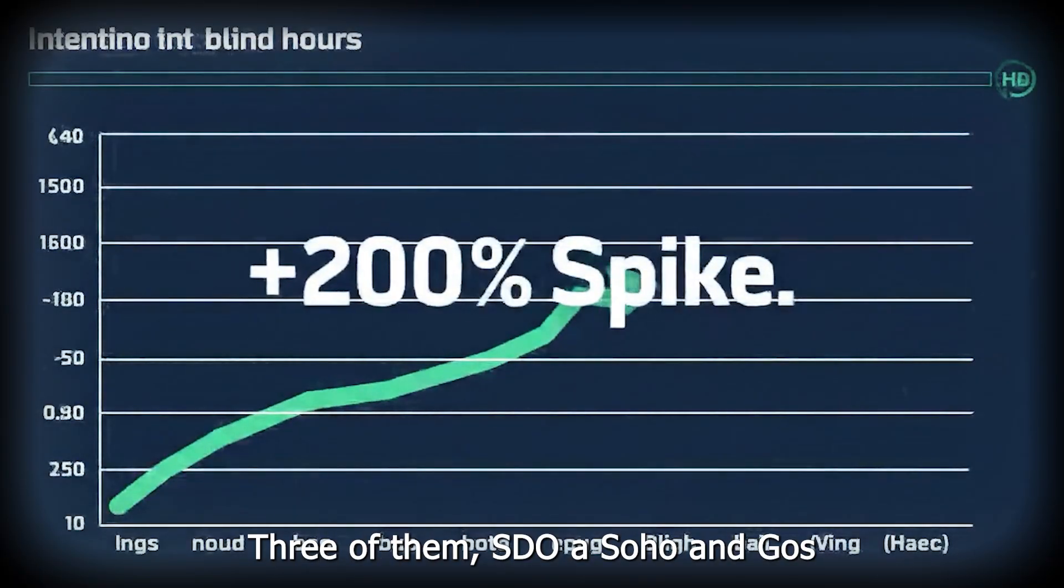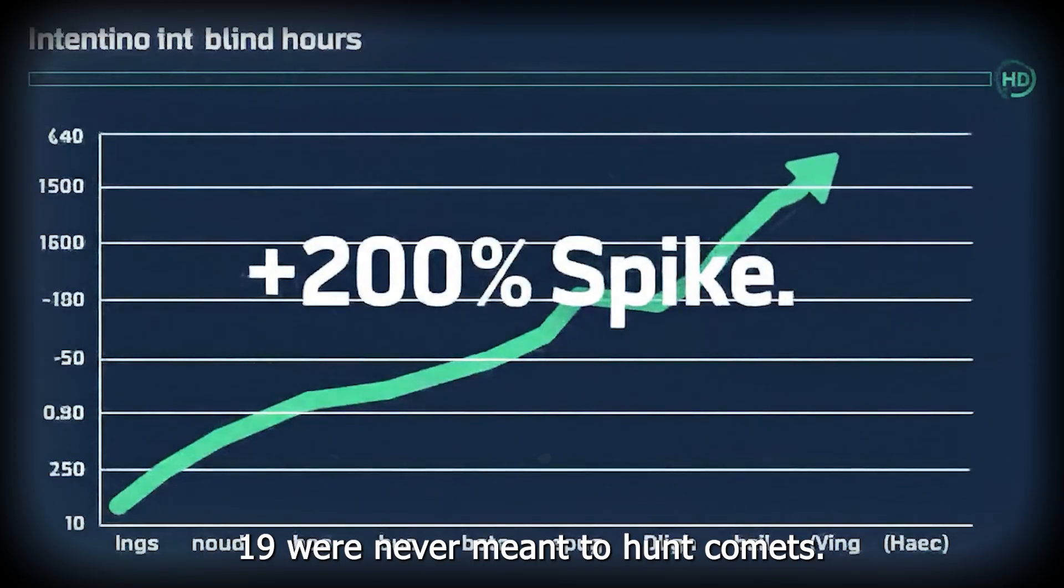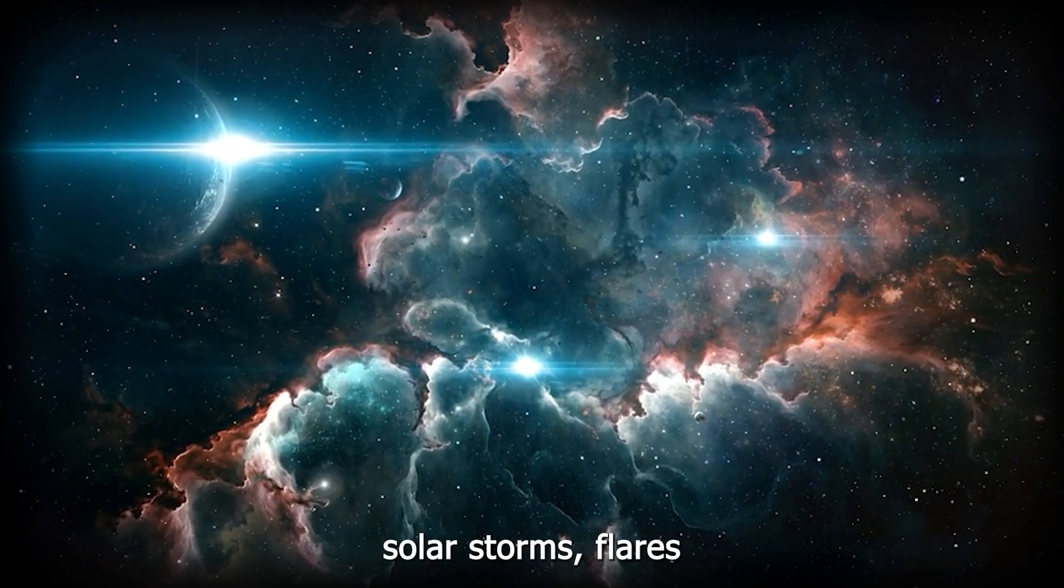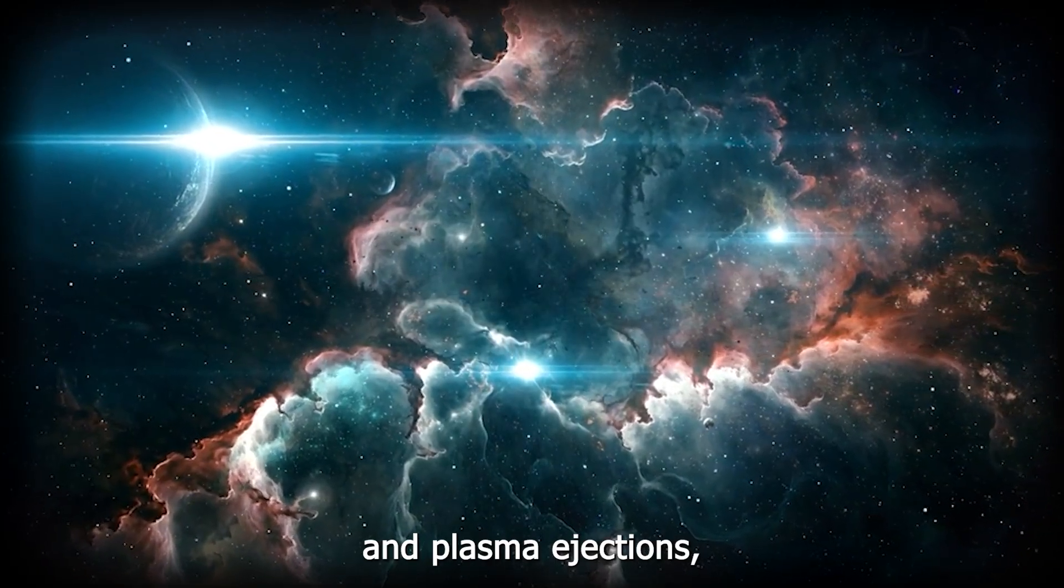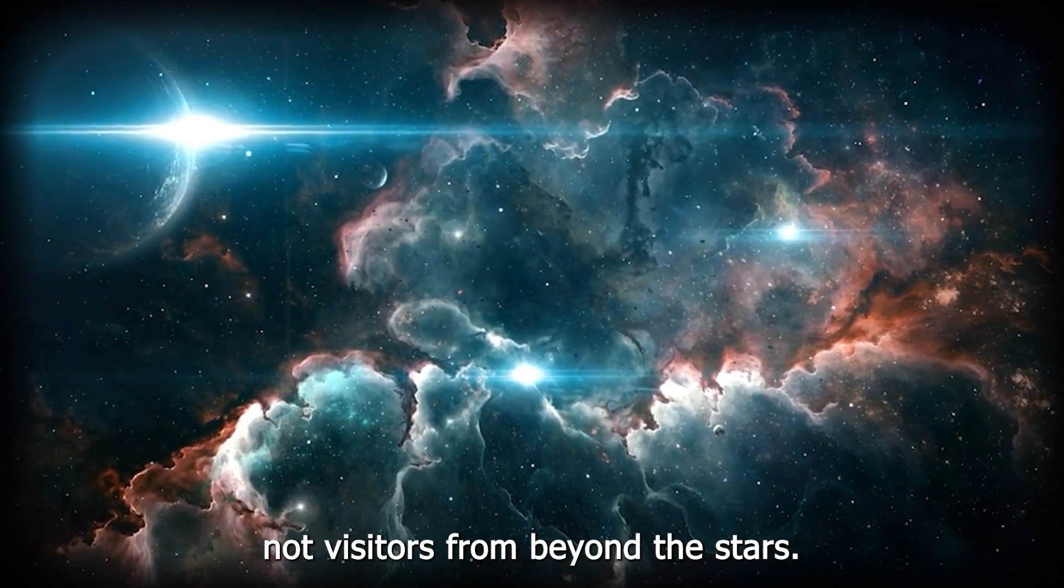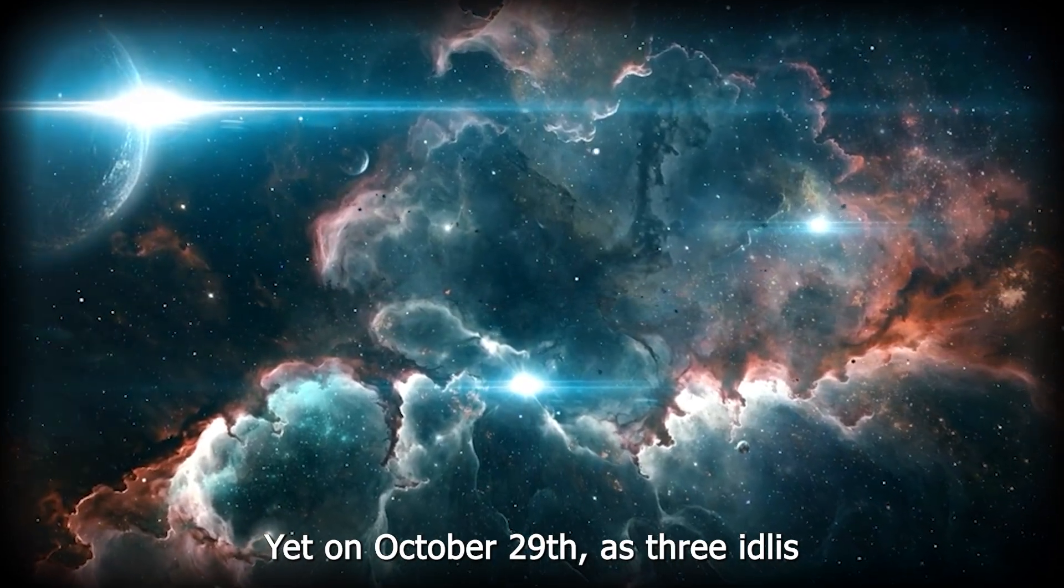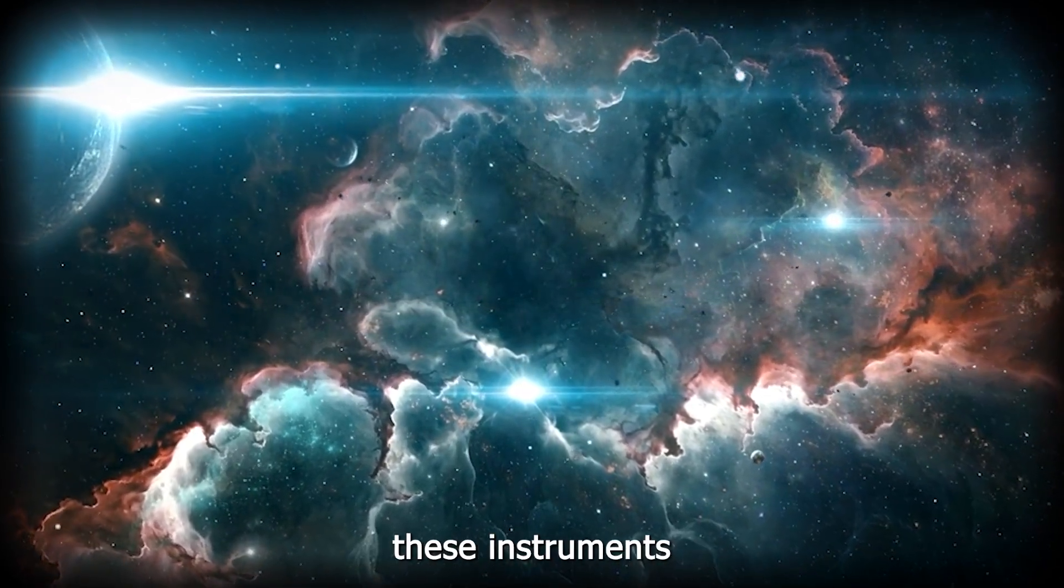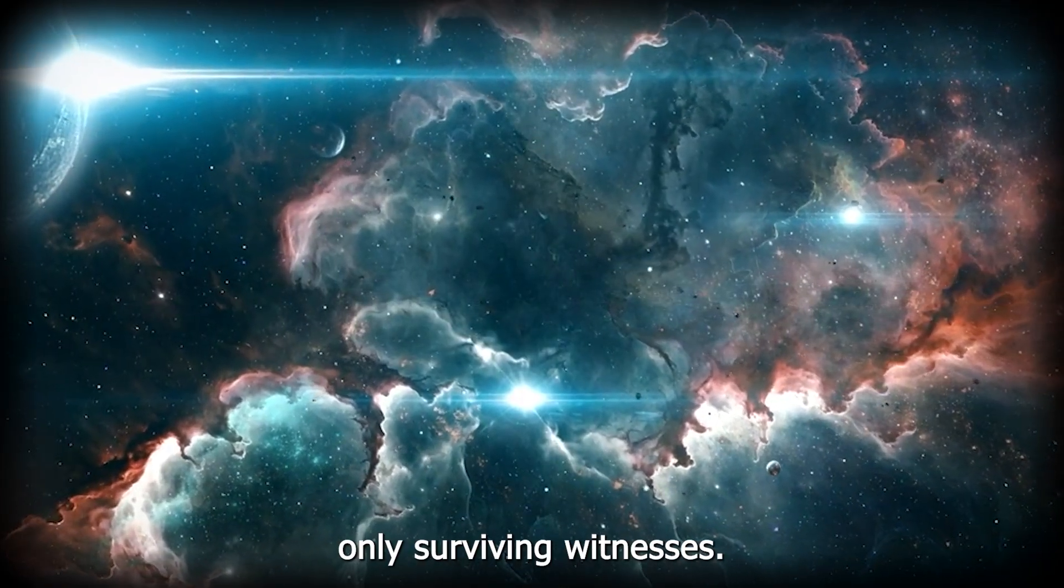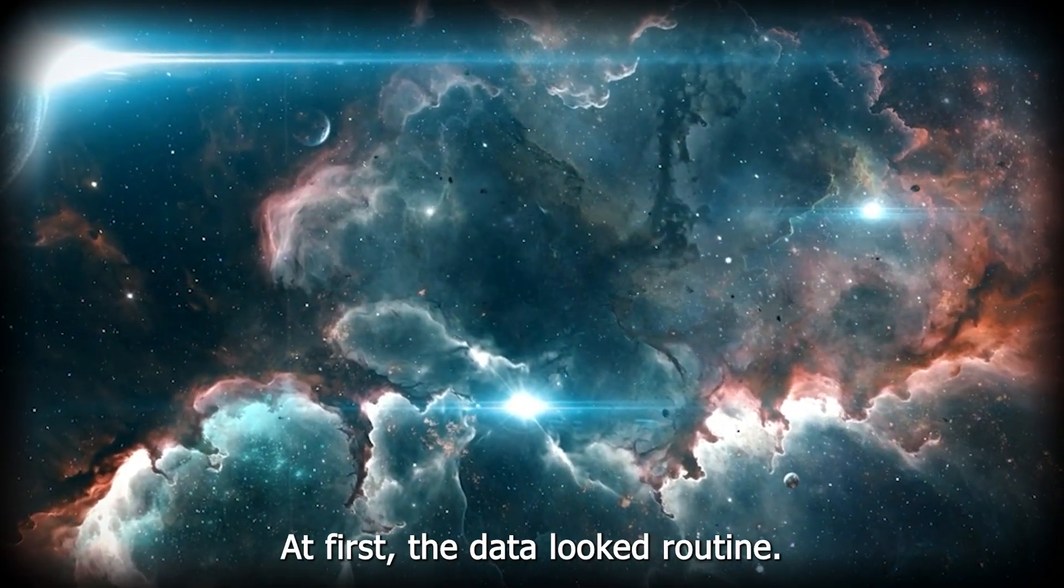When Earth's telescopes were blinded, the truth fell to the machines floating in the silence of space. Three of them, Stereo A, Soho, and GOES-19, were never meant to hunt comets. They were built to study solar storms, flares, and plasma ejections, not visitors from beyond the stars. Yet on October 29th, as 3i Atlas slipped behind the Sun, these instruments became humanity's only surviving witnesses.